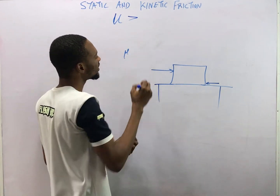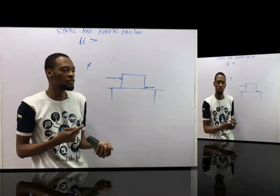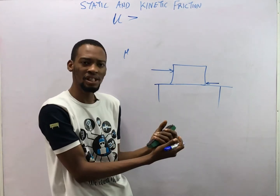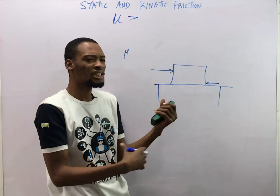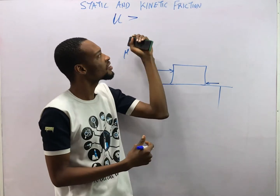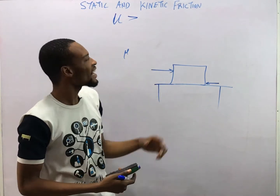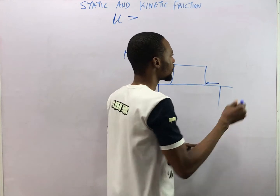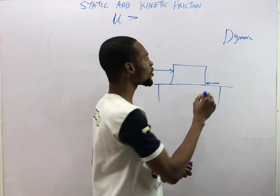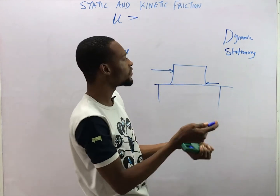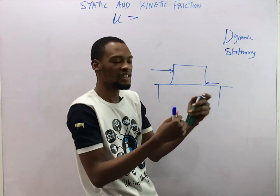The coefficient of friction, mu (μ), shows the level of friction a body has. The bigger the coefficient of friction, the more the frictional force and the more the resistance. So the coefficient of static friction is greater than the coefficient of kinetic friction. Kinetic friction is also referred to as dynamic friction — it's dynamic, it's moving — while static friction is also referred to as stationary friction.